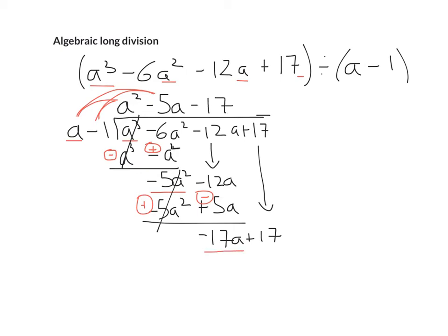We multiply that by both terms outside, so it's -17a + 17. Change both their signs. They all cancelled to give us 0, so therefore our answer is up on the top, which is a² - 5a - 17.